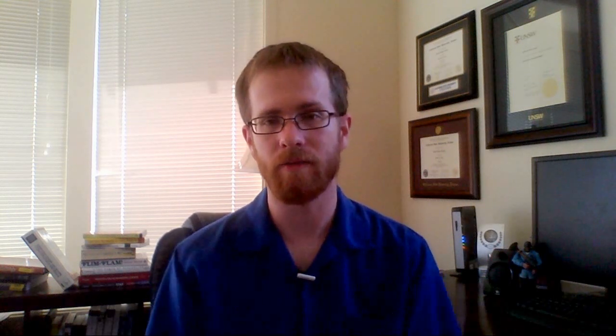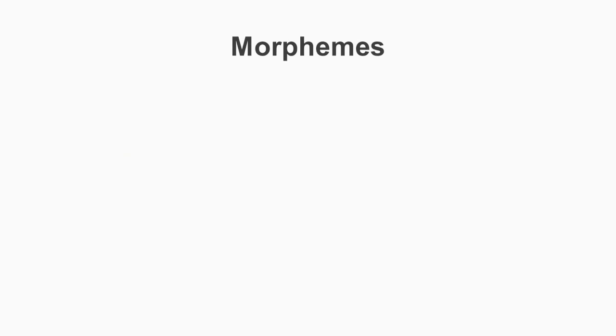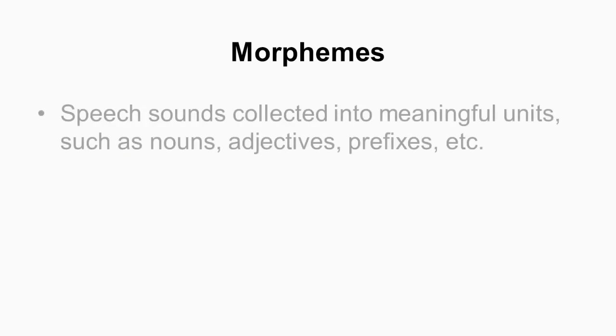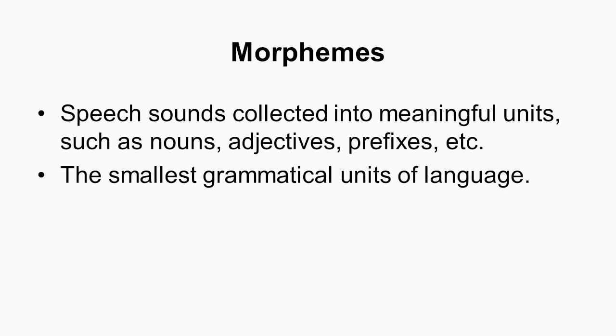When you start combining phonemes into meaningful units in a language — like a noun, adjective, verb, or whatever — now we're at the second level: the morpheme level. Morphemes are the smallest grammatically meaningful units of a language. There are many different kinds of morphemes, but the whole idea is you can't reduce them down any further. If you try to break a morpheme down into its subparts, it will lose all meaning.